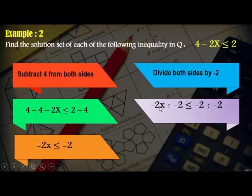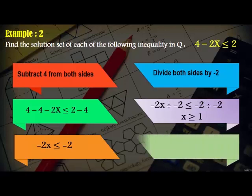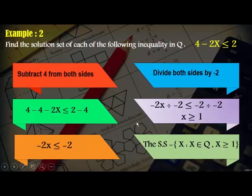Dividing: negative 2x divided by negative 2 gives x, and negative 2 divided by negative 2 gives 1. But since we divided both sides by a negative number, we change the inequality sign. So x is greater than or equal to 1. The solution set equals the set of x where x belongs to Q and x is greater than or equal to 1.